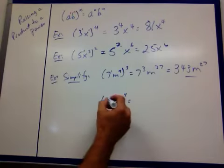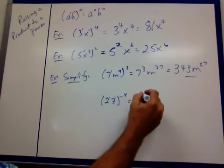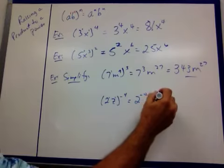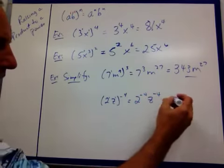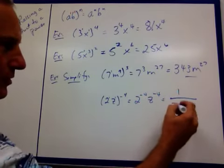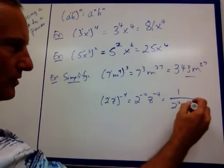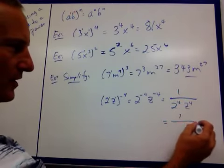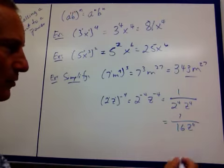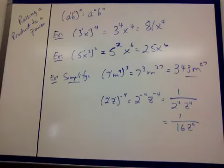Even the negative exponents, 1 and 1, so I'm going to get 2 to the negative 4th, z to the negative 4th. That's 1 over 2 to the 4th, z to the 4th. And I can simplify that down, 16 z to the 4th. 2 times 2 is 4, times 2 is 8, times 2 is 16.